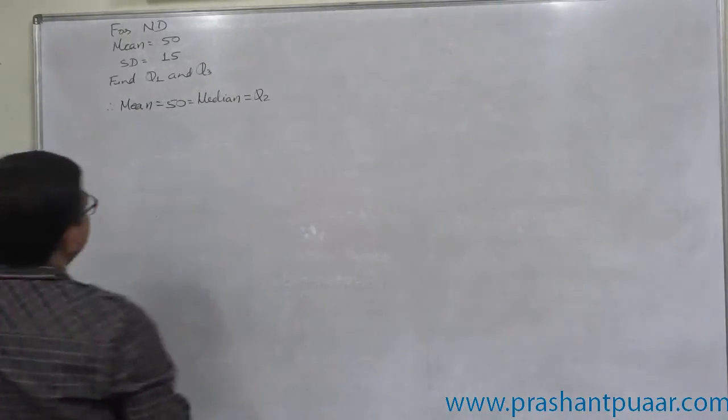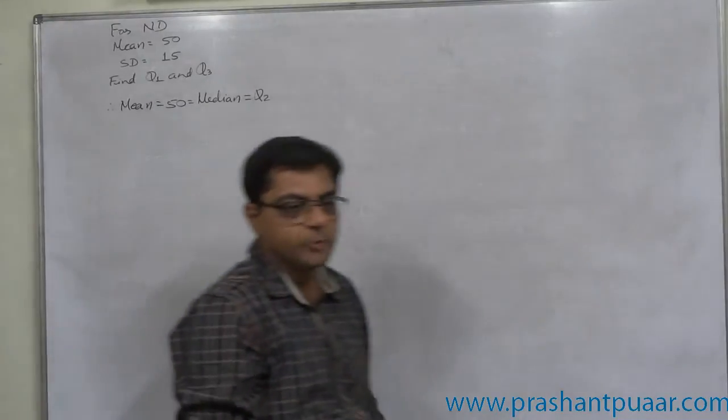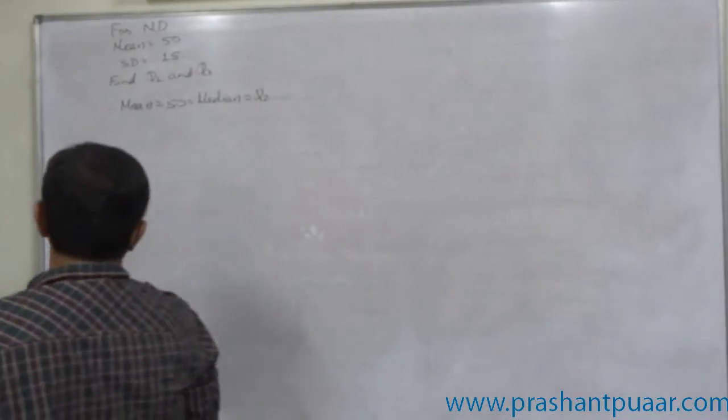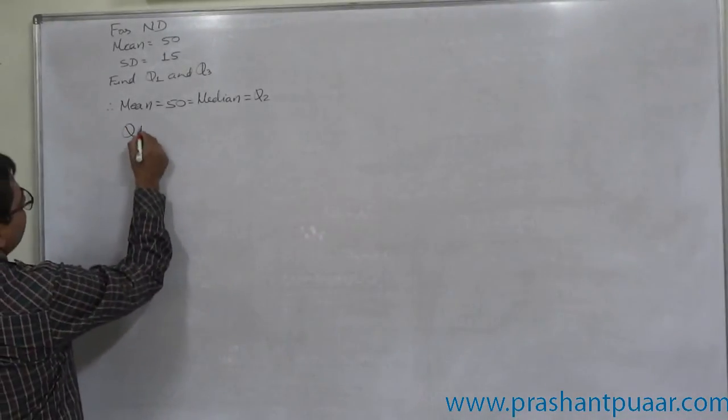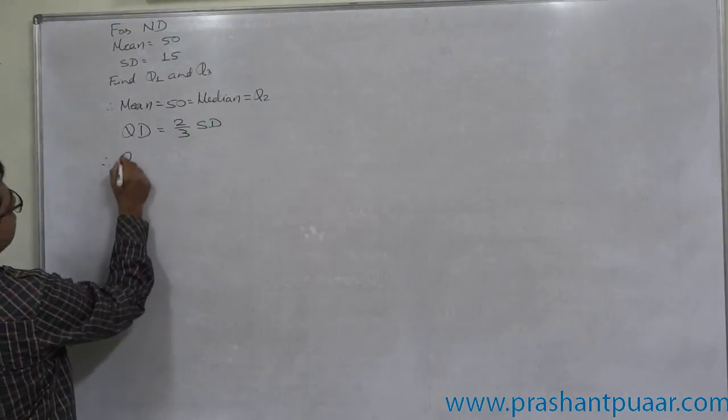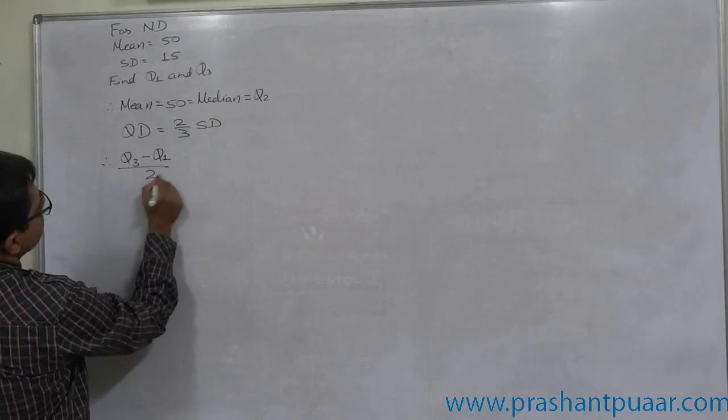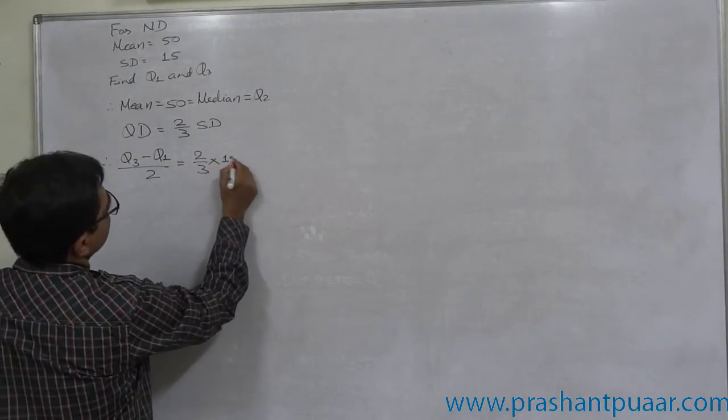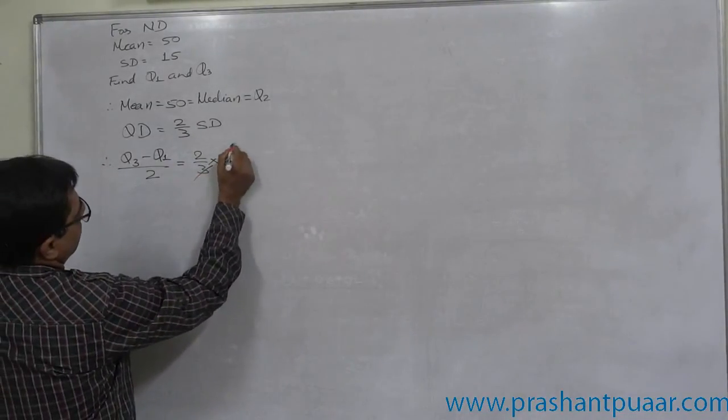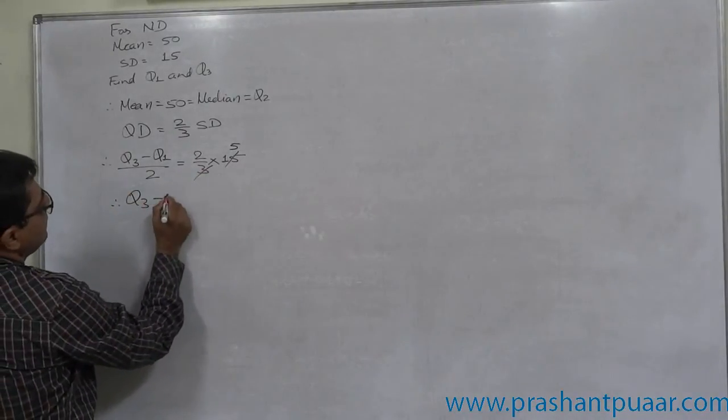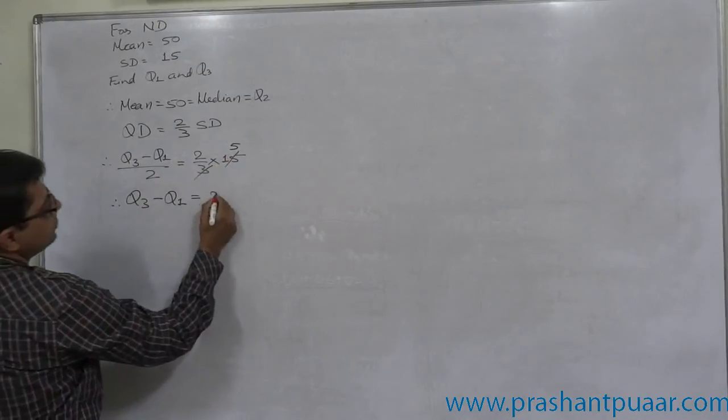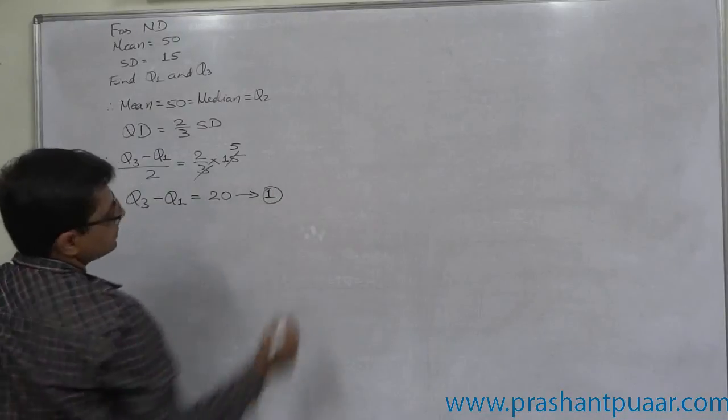And standard deviation is 15. And recently we proved that two-thirds standard deviation equals to quartile deviation. So, quartile deviation equals to two-thirds standard deviation. That means, Q3 minus Q1 divided by 2 equals to 2 by 3 into 15. Therefore, Q3 minus Q1 equals to 2 into 5, 10 into 2, 20. This can be our equation number one.